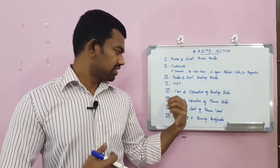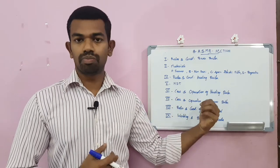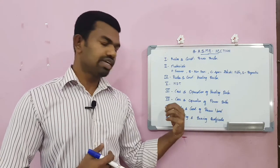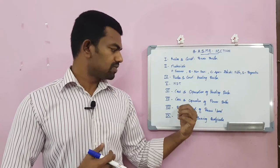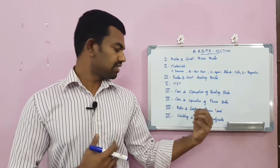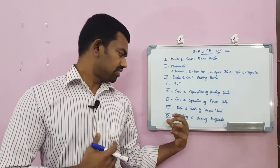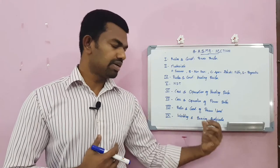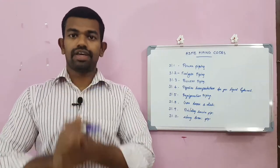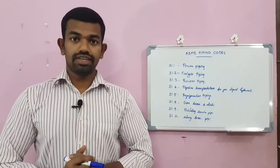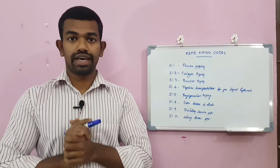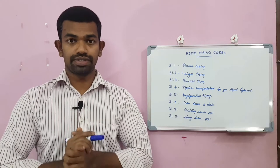Section 7 covers care and operation of power boilers. Section 8 covers rules and construction of pressure vessels. Section 9 covers welding and brazing qualification. Now let's look at the ASME piping codes.